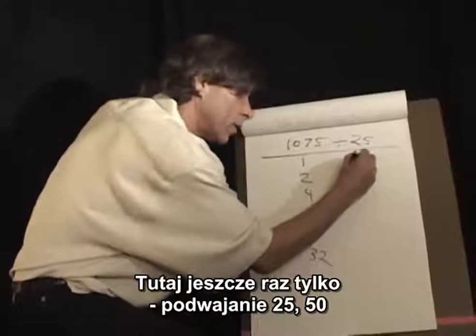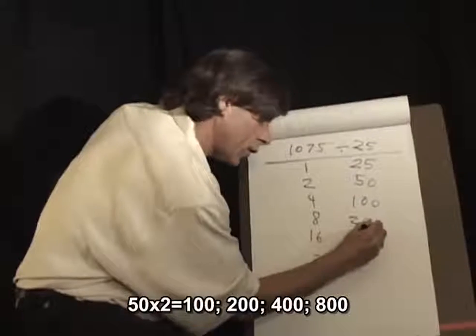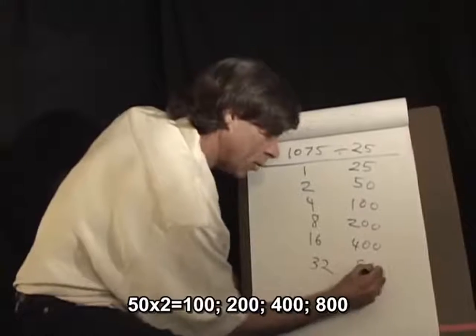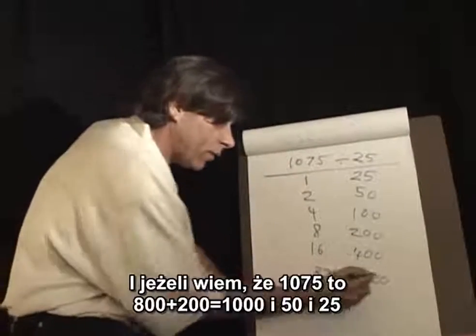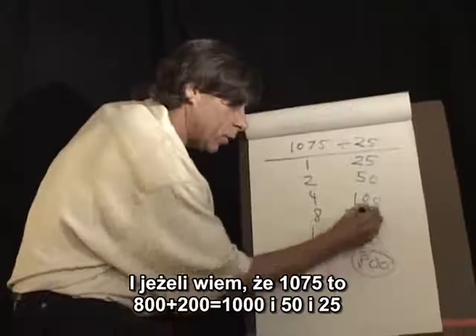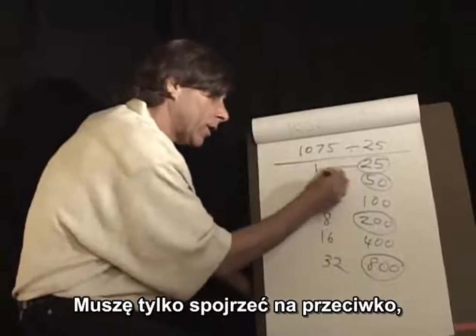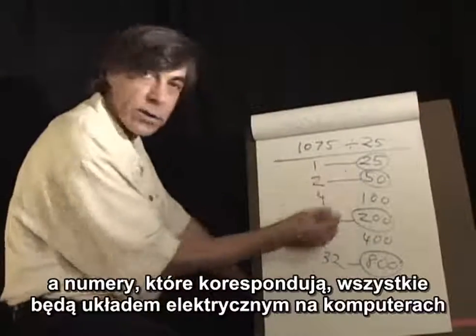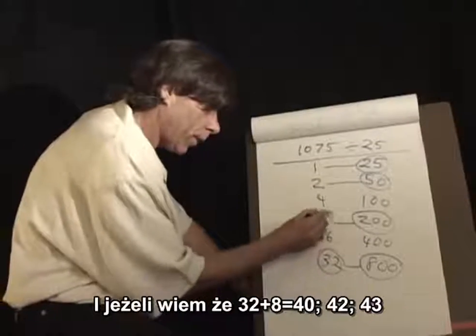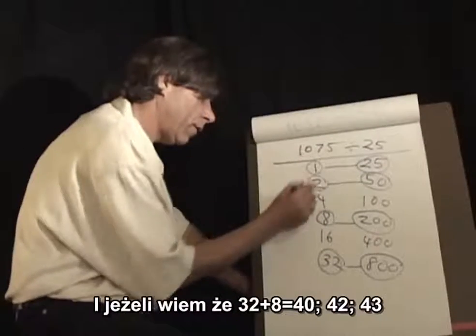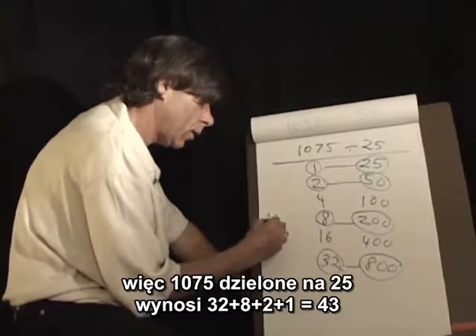Here again, just the doubling of 25: 50, double that 100, 200, 400, 800. I stopped there because if I went further it's 1,600, which is larger than 1,075. And if I know that 1,075 is 800 plus 200 — that makes 1,000 — and 50, and 25, I just have to look across at the corresponding numbers. And if I know that 32 plus 8 is 40, plus 2 is 42, plus 1 is 43. So 1,075 divided by 25 is 32 plus 8 plus 2 plus 1, which is 43.